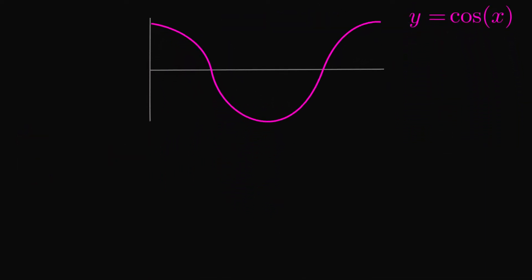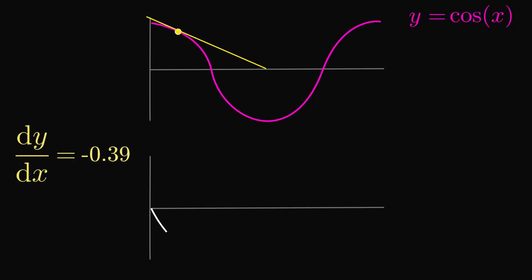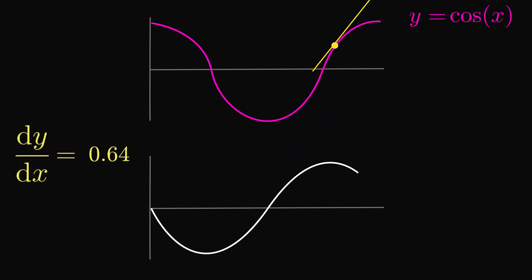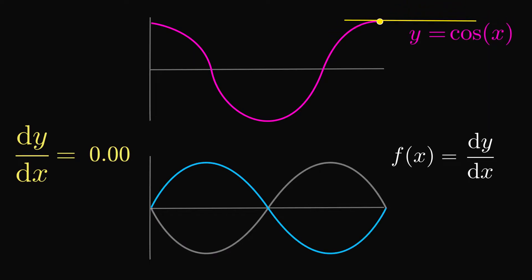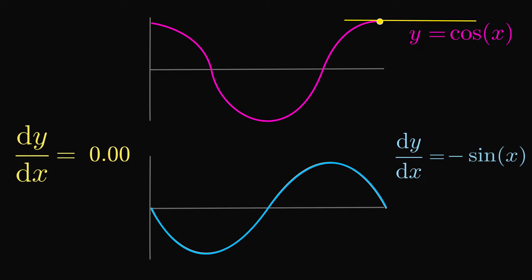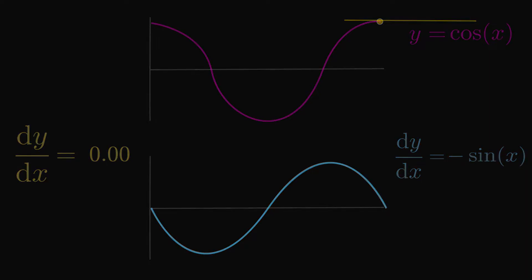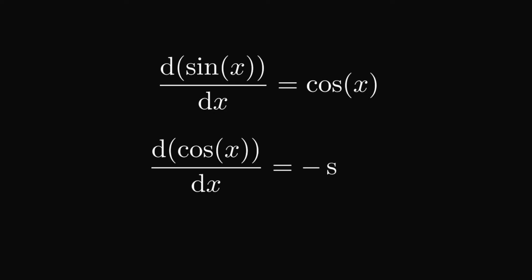Now let's take our cosine function and plot the values of the gradient like we did before. We see that we end up with the sine function but reflected in the y-axis. Therefore dy/dx is equal to minus sine x. So we have the beautiful relationship that the derivative of sine x is cosine x, and the derivative of cosine x is minus sine x.